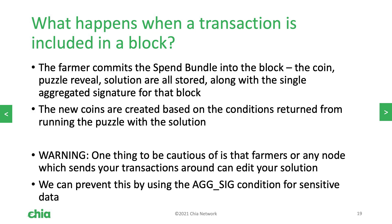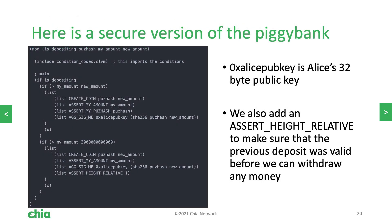So what happens when a transaction is included in a block? The coin, the puzzle reveal, and the solution are all stored along with the single aggregated signature for that block. The new coins that are created based off the returned conditions are committed to the blockchain, but you should be cautious that farmers have access to your puzzle reveal and your solution. So you need to secure data using signatures, because otherwise a malicious actor might be able to change what your solution is. Here is a secure version of the piggy bank. Notice how puzhash and new amount are now secure, because there's a signature required from Alice's pubkey of those values.